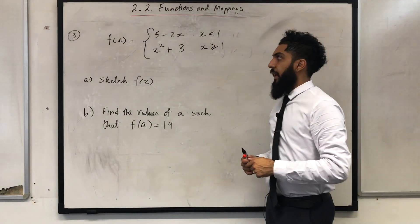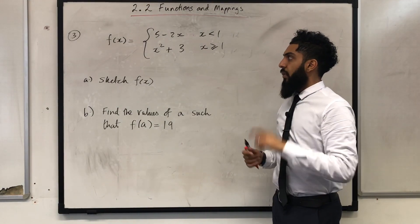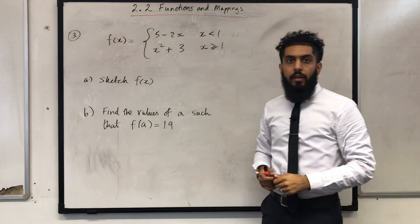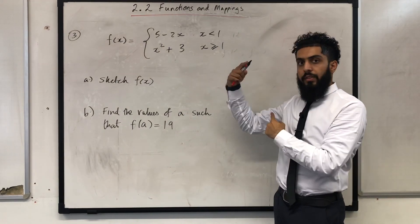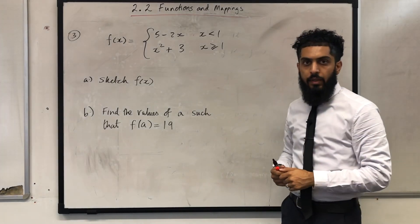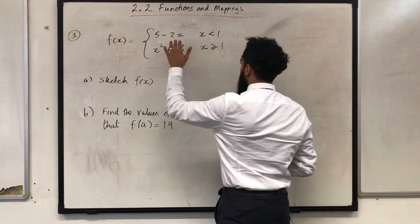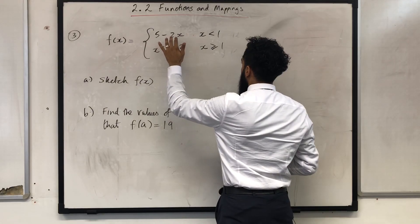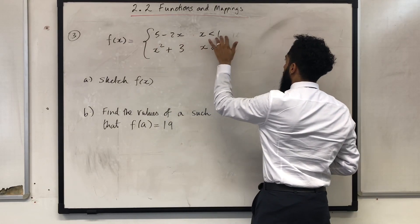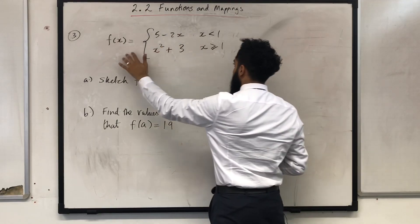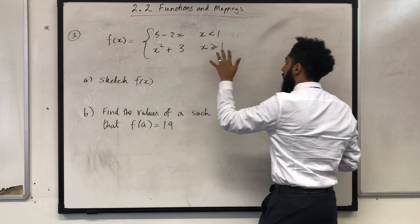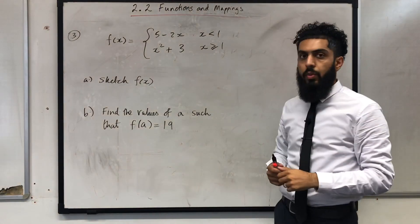Let's move on to question number three. We have a piecewise function: f(x) = 5 - 2x for x < 1, and f(x) = x² + 3 for x ≥ 1.